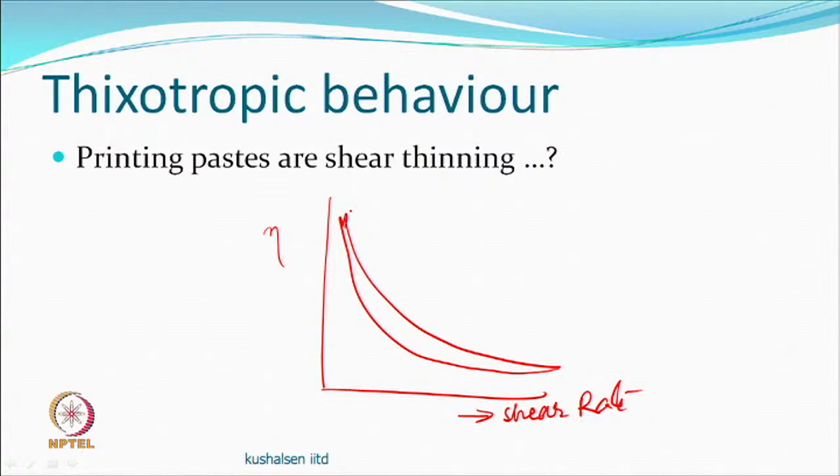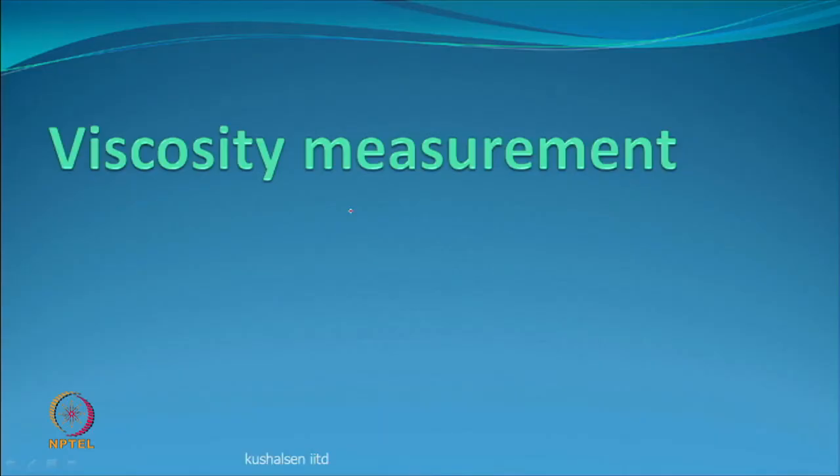We all understand viscosity is temperature-dependent — increasing temperature changes viscosity. So whenever you measure viscosity, you must specify at what temperature you measured it. Additionally, people will want to know how you measured it. Just as with polymer crystallinity, where you must specify whether you used wide-angle X-ray diffractometry, DSC, or density methods, viscosity measurements also require specifying the method used.